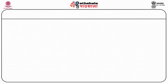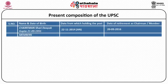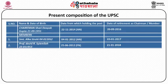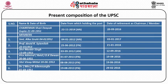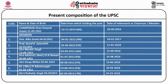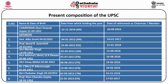The current composition of the Union Public Service Commission has one chairperson and seven other members. Shri Deepak Gupta is the chairperson of the Union Public Service Commission. Along with the chairperson, the names, dates of joining, and retirement of the other members of the commission are also mentioned in this table.